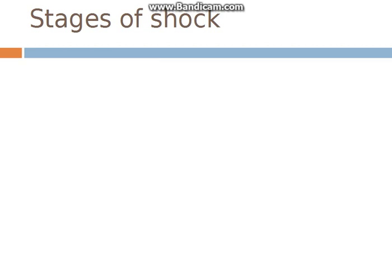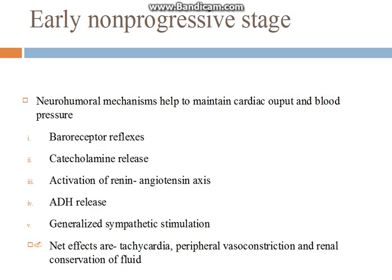So stages of shock. First is the early non-progressive stage. In this, neurohumoral mechanisms may help to maintain cardiac output and blood pressure — for example, baroreceptor reflexes, catecholamine release, the RAS system, and ADH release. These all lead to tachycardia, peripheral vasoconstriction, and renal conservation of fluid.